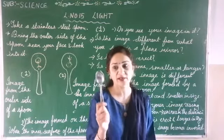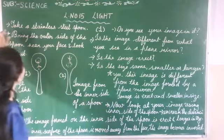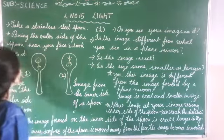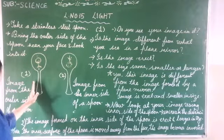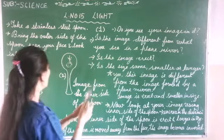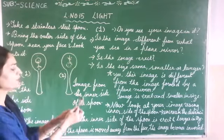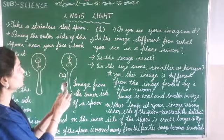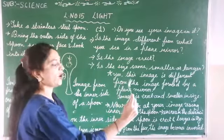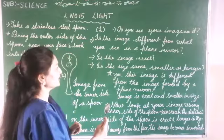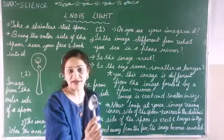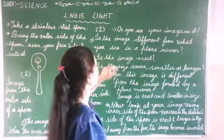If you have a new spoon, you can take the image from the outer side of the spoon. Take a stainless steel spoon. Now let's look at two images from the spoon: one is the image from the outer side of the spoon, the other image is from the inner side of the spoon. Look at the spoon — do you see your image? You can see it. Is the image different from what you see in a plane mirror?